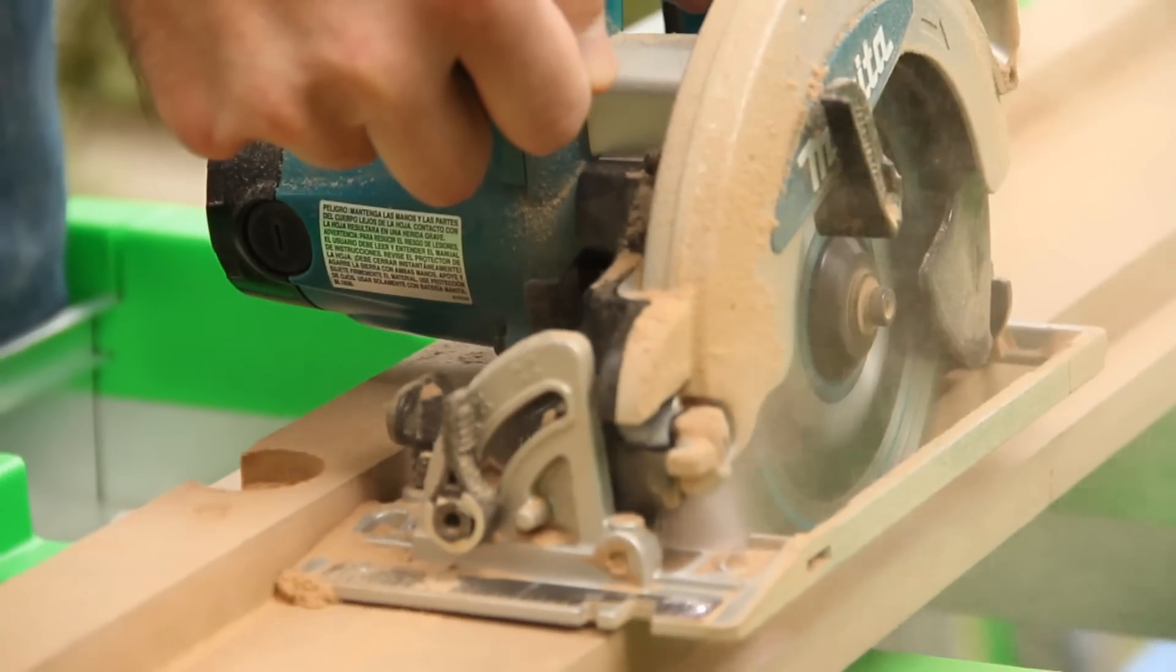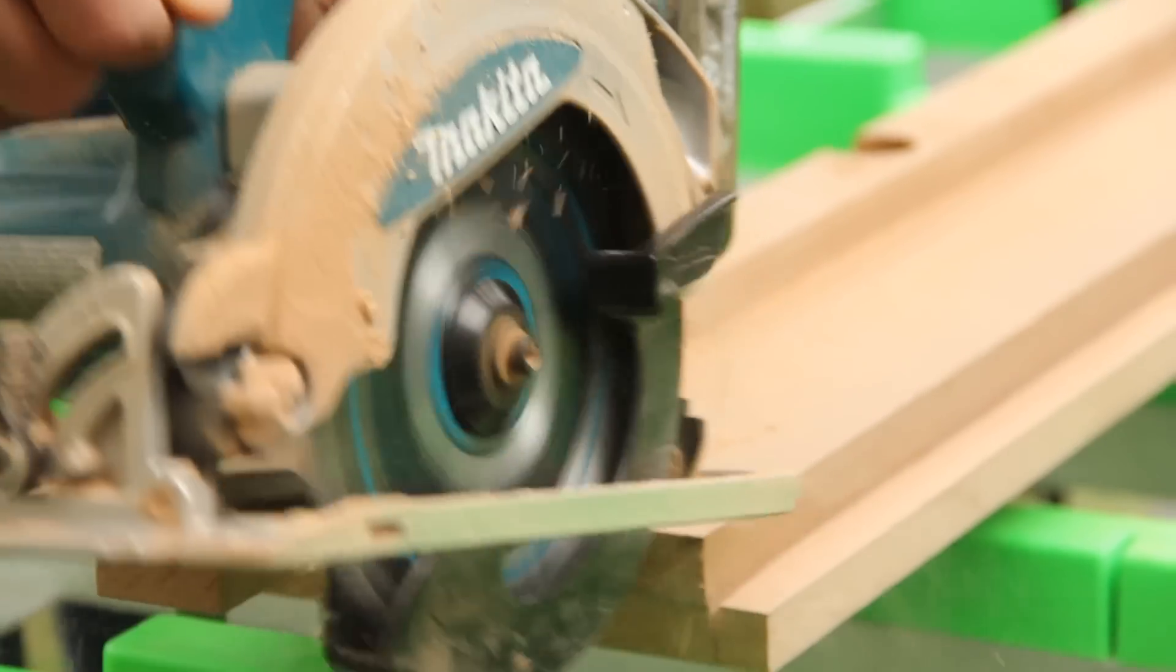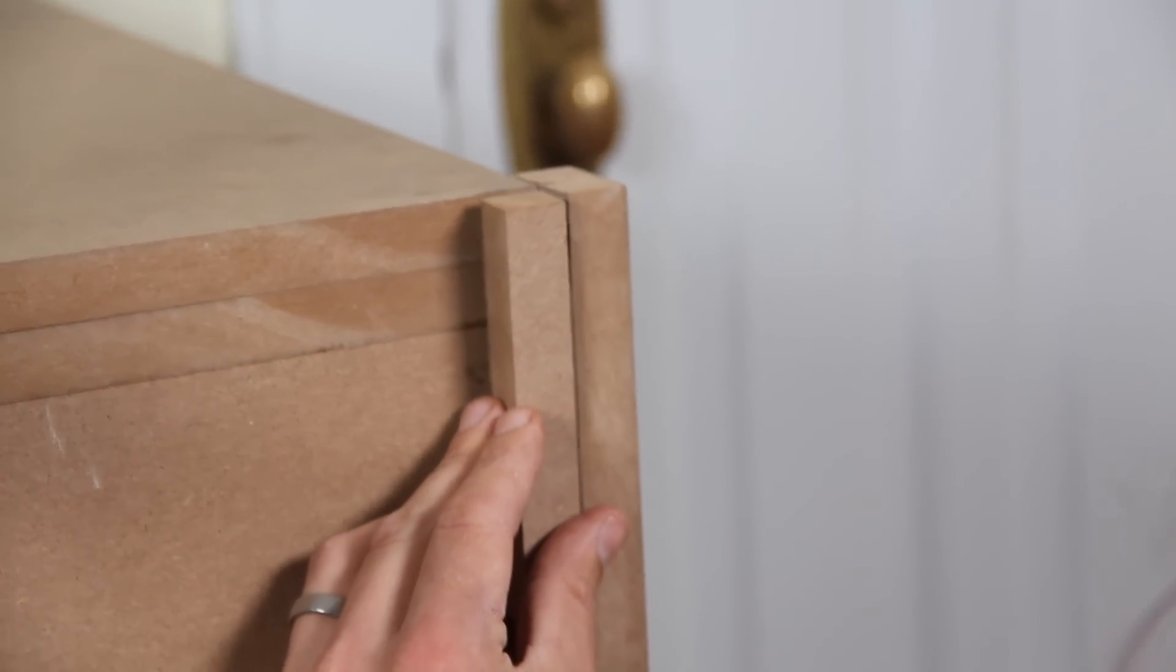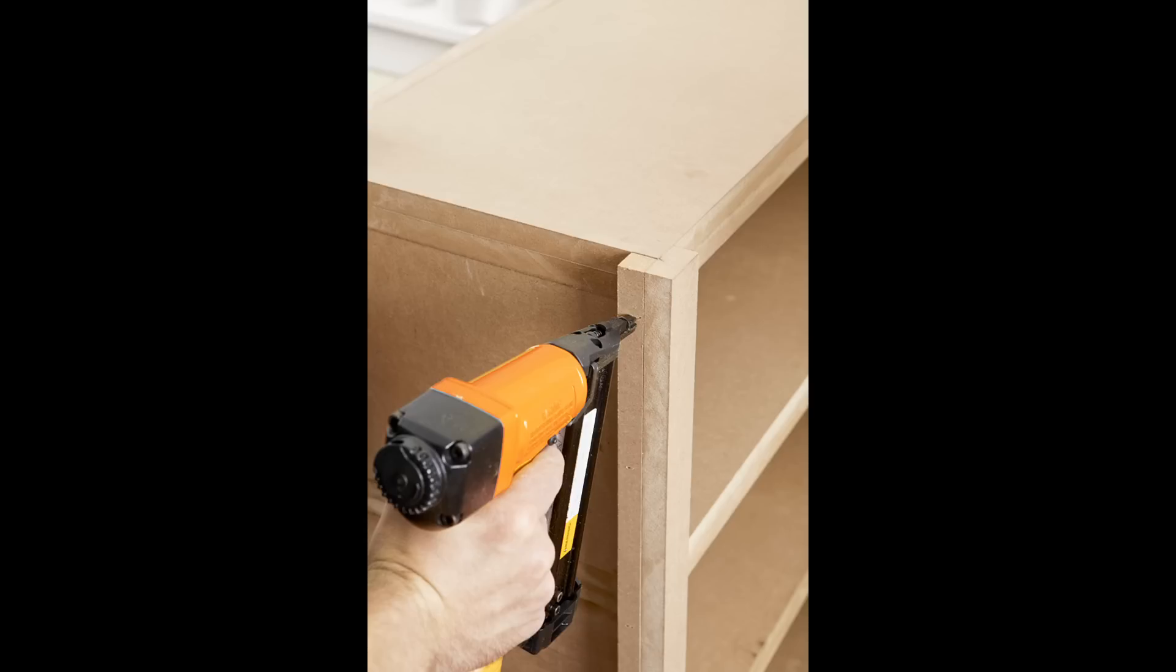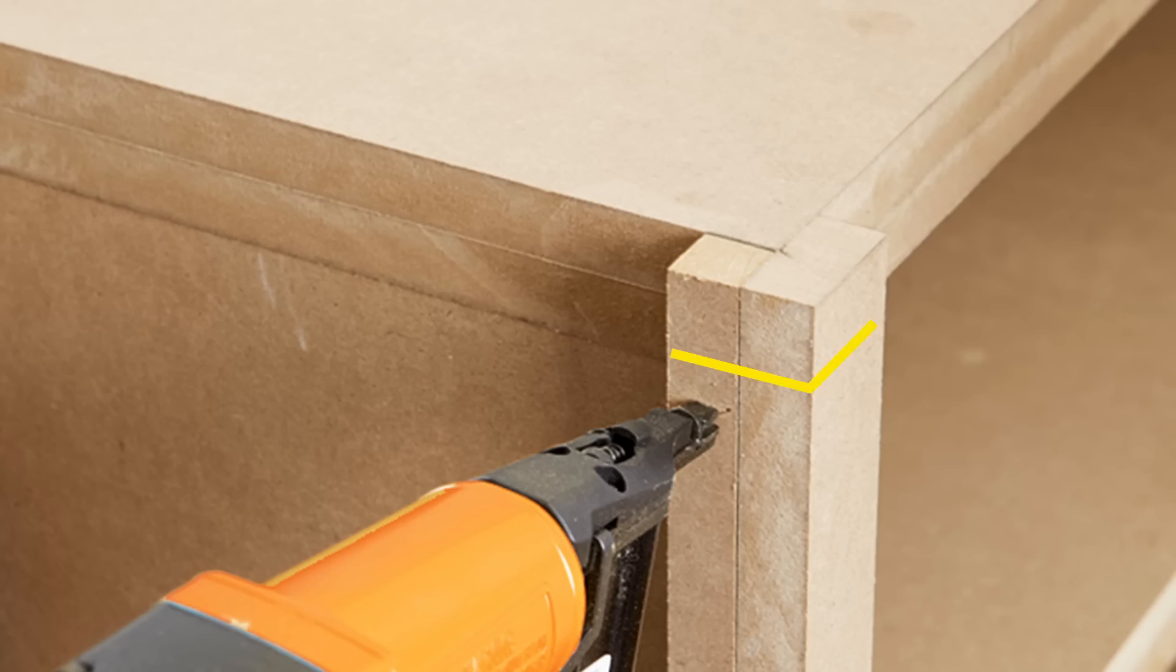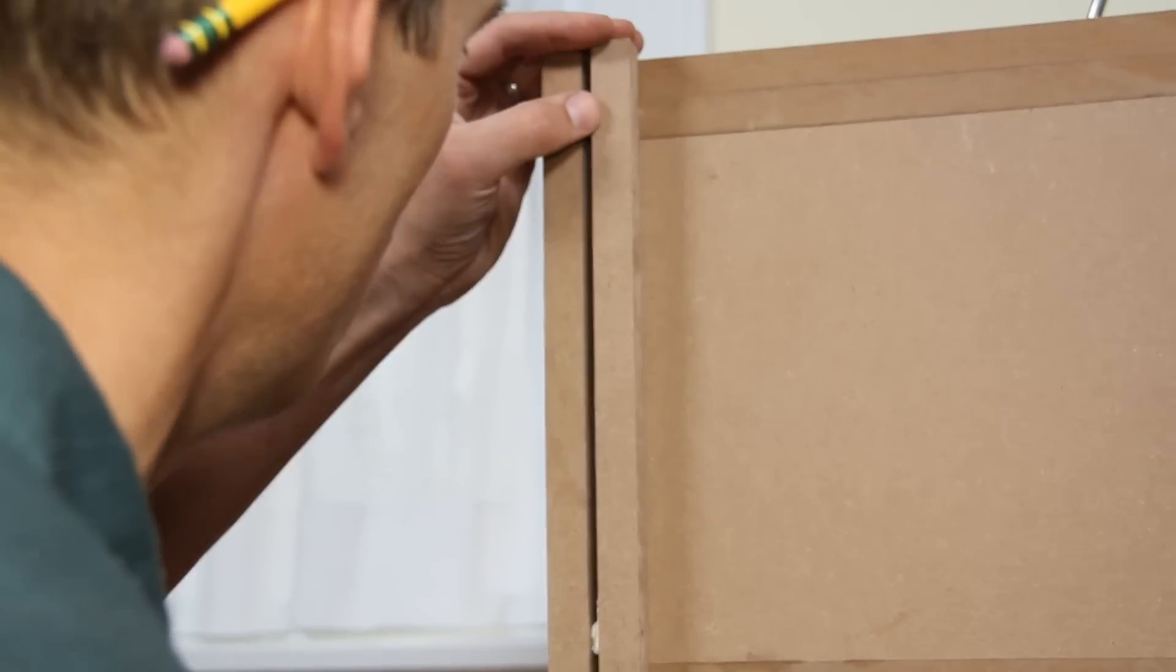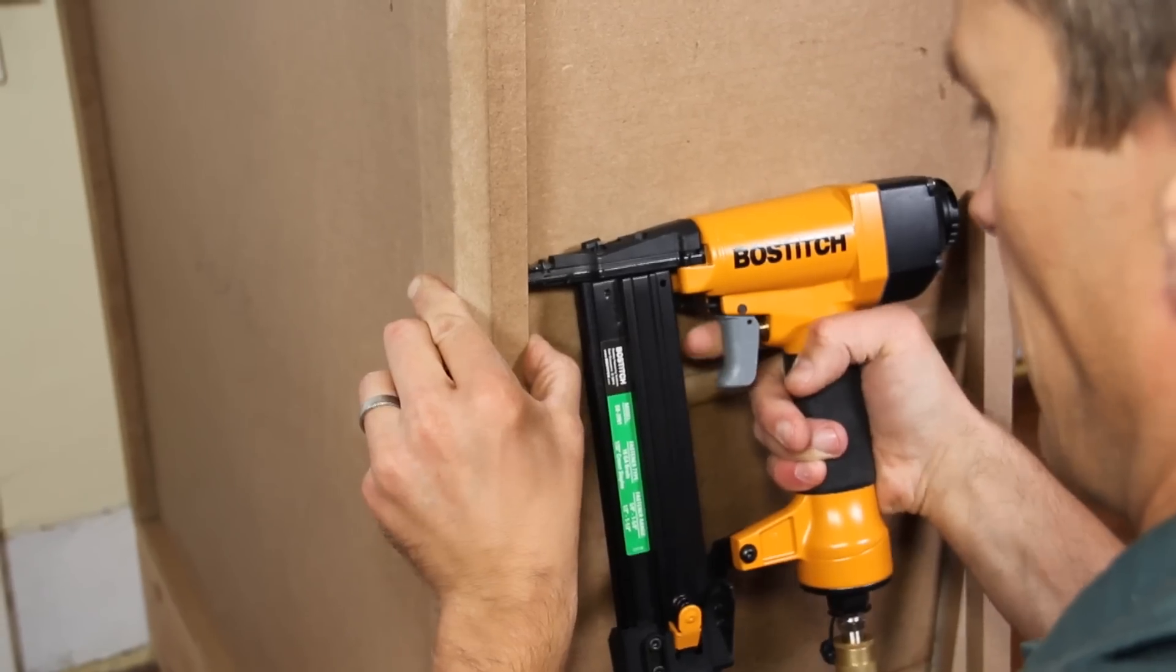For the styles on the end of the cabinet, rip pieces three quarters of an inch wide and butt them up against the overhanging styles that you just installed. That way the trim measures an inch and a half on both sides of the corners. Glue them in place and tack them down with brad nails.